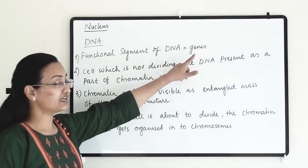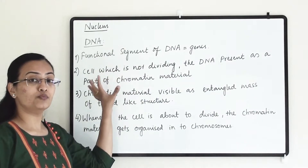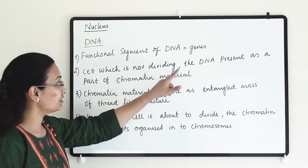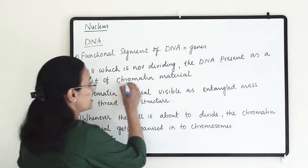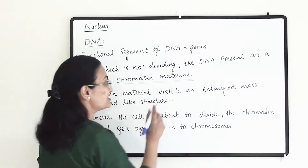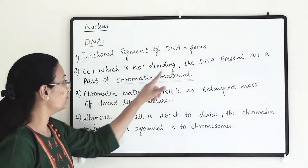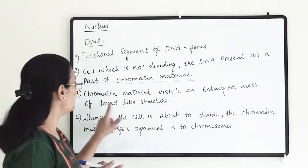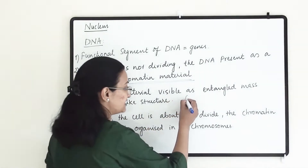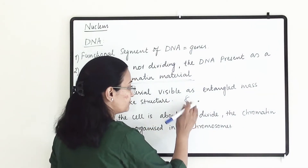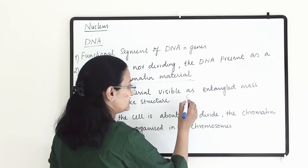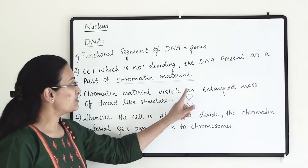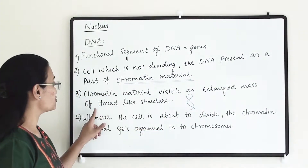The functional segment of DNA is a gene, and the full form of DNA is deoxyribonucleic acid. In a cell which is not dividing, the DNA is present as a part of chromatin material. When the cell is not dividing, DNA will be part of chromatin material. Chromatin material is visible as an entangled mass of thread-like structures.